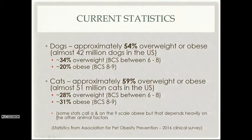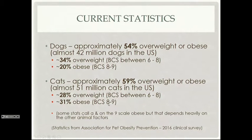There's a small typo on the slide — that should be an 8. Some stats call a 7 obese on this scale, but don't worry too much about that. The main takeaway is that dogs and cats in the United States are heavily in trouble with regard to their weight management.